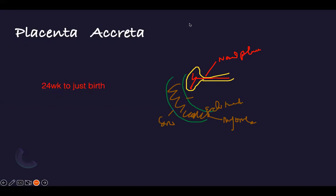In accreta, the placenta makes its way into the wall of the uterus, and the vessels basically penetrate into the wall — they are embedded. So this is placenta accreta. It is a very serious problem, especially during birth.